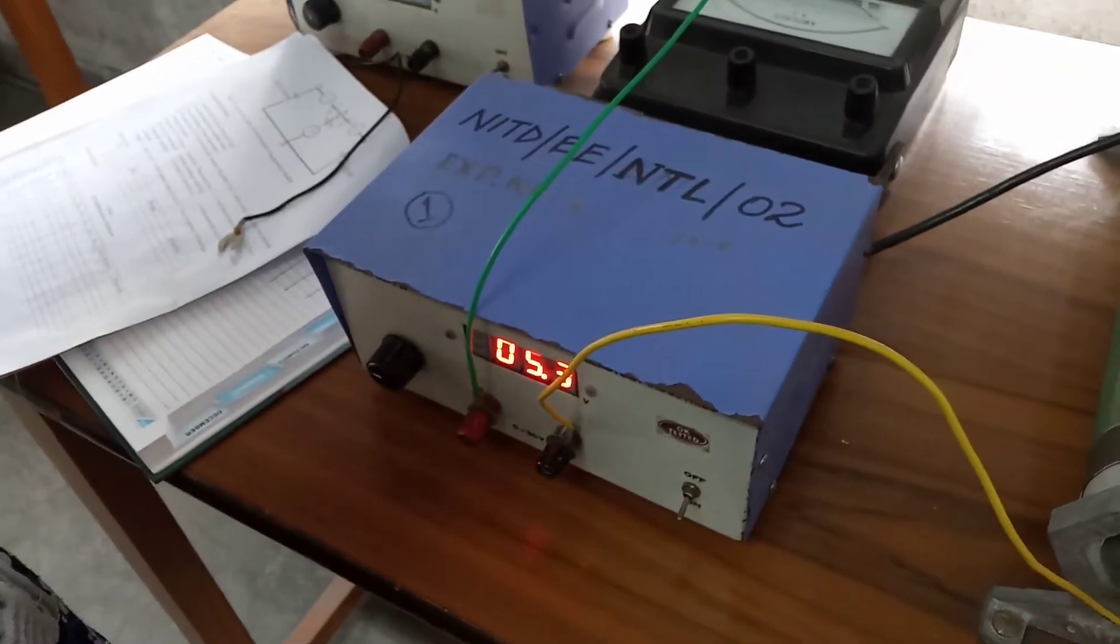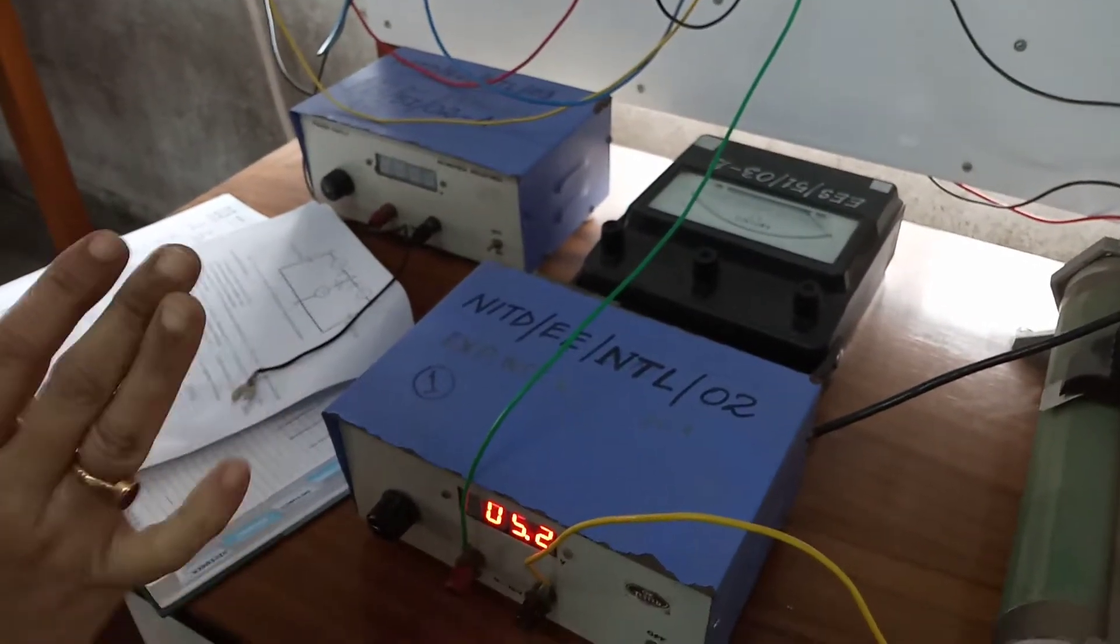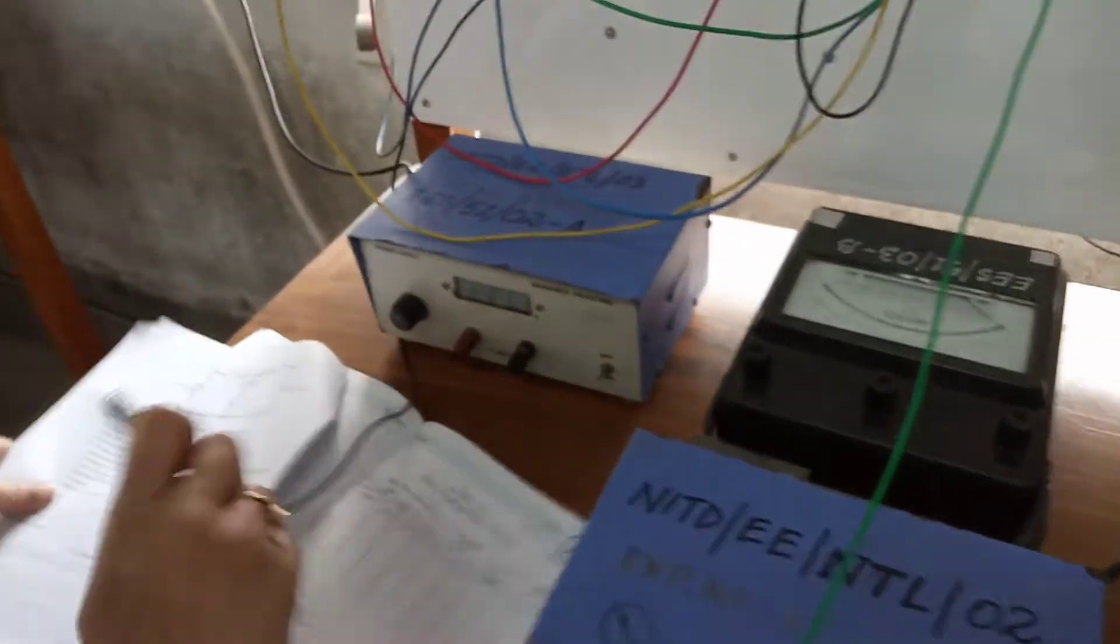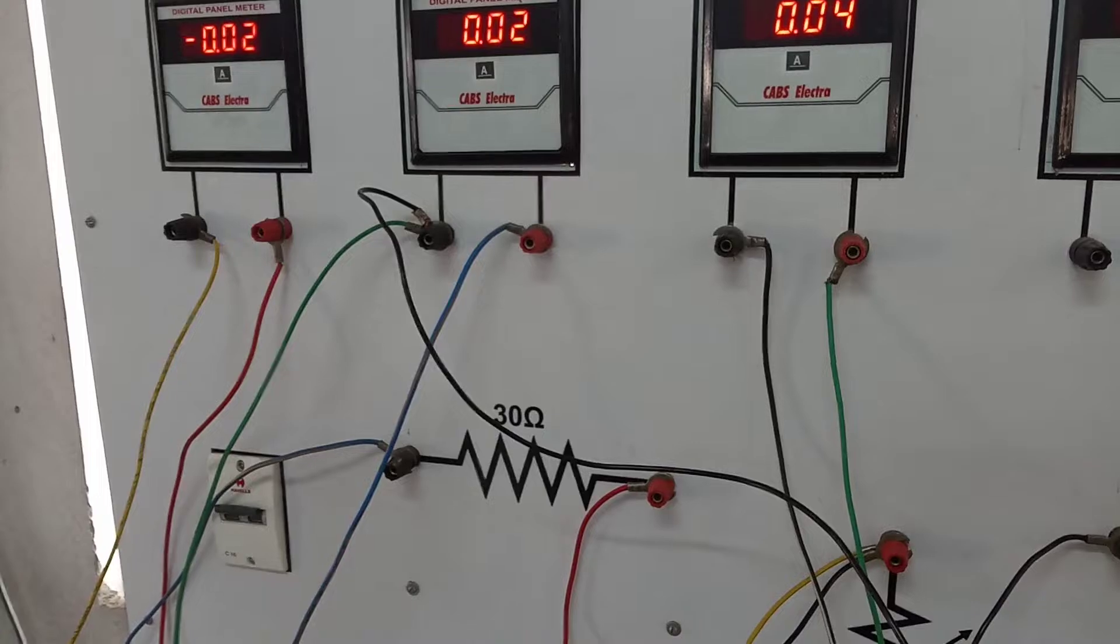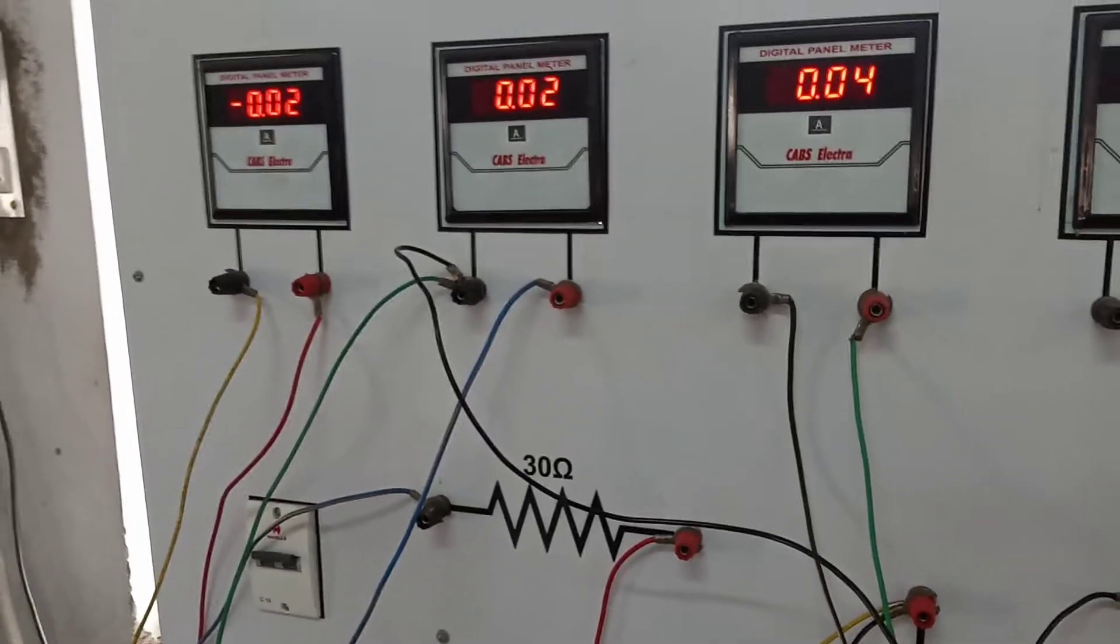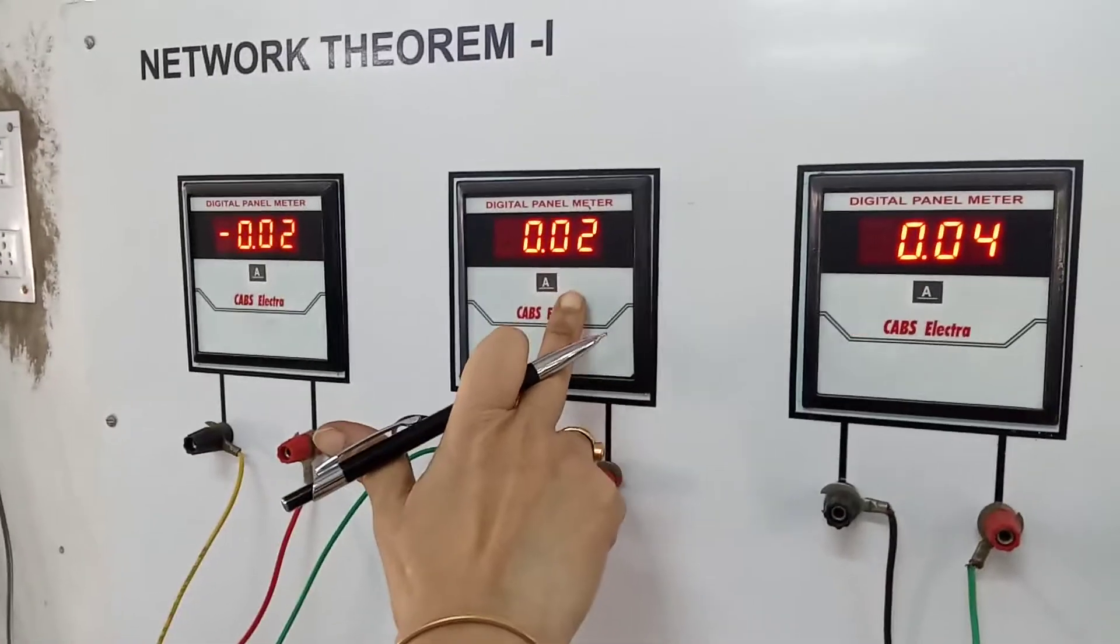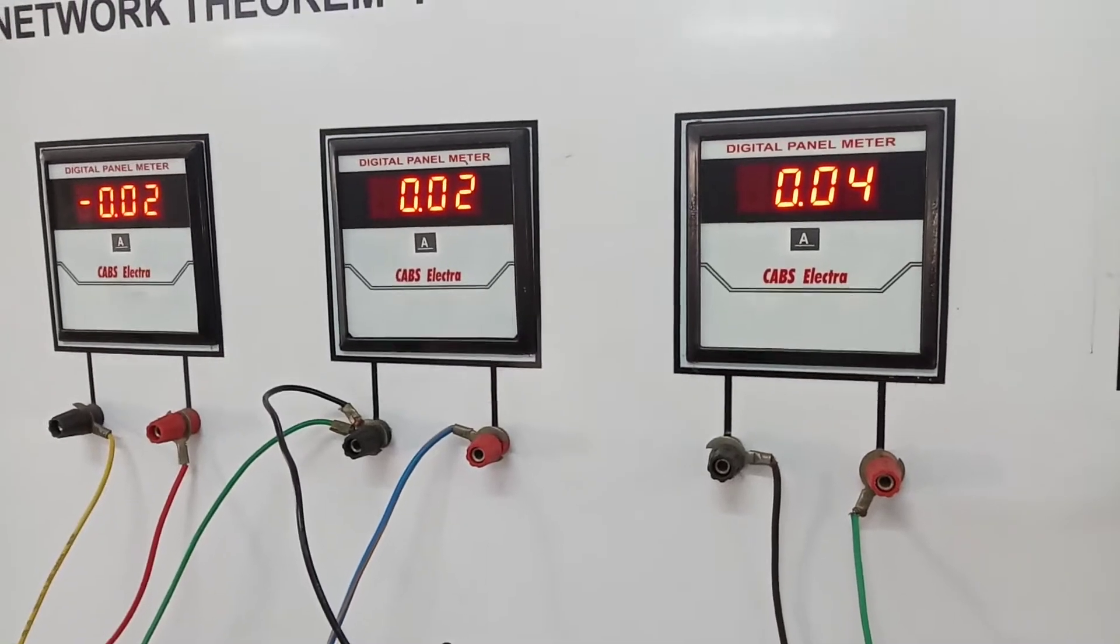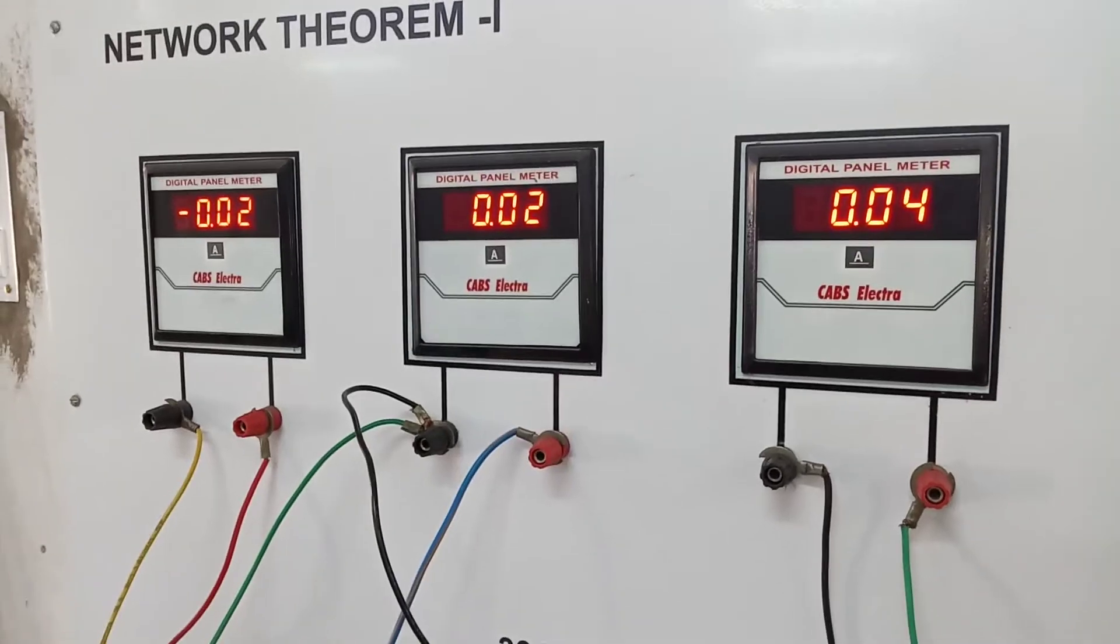Remember that V1, V2 values should not be varied during the whole experiment. Now let me measure. This one is I1b, flowing in the opposite direction with respect to the previous one. This is I3b and that is I2b. All are in amperes.